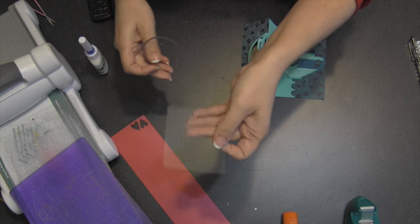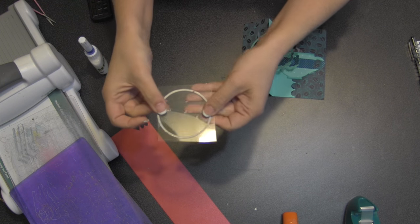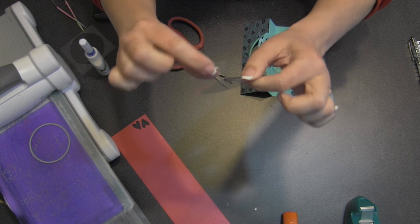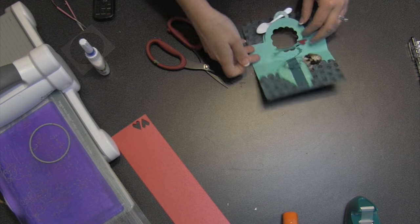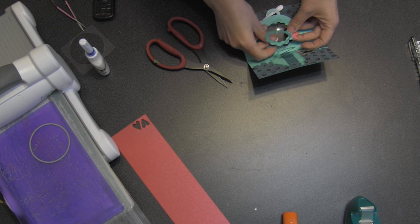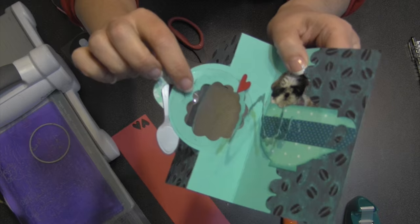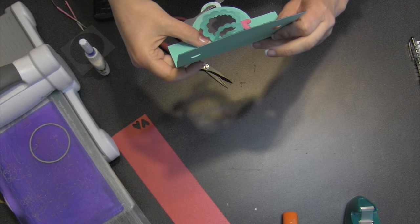So the die set comes with a circle die. I'm going to go ahead and die cut that out of just some leftover clear packaging material. I just need to cut a slit on one side, then I can weave that from the inside of the card. The slit goes around the end of the spiral right there, and now I've got a window pane.